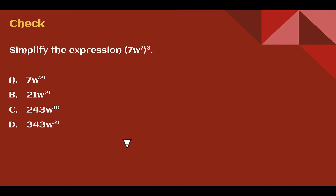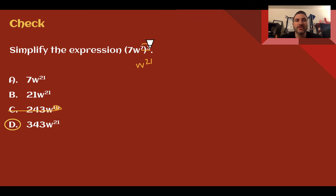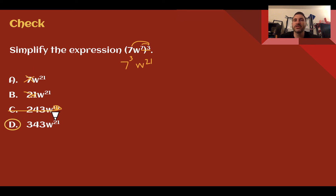Check your understanding: Simplify the given expression. Pause the video now and complete the check. You should have picked D: 343w to the 21st. For the exponent on w: 7 times 3 is 21, which eliminates C. Remember, we also have to apply the exponent to the factor of 7. 7 to the 3rd power is 343 — not just 7 times 3 which would be 21. Option A is if we forgot to do it at all. So the answer is D: 343w to the 21st.